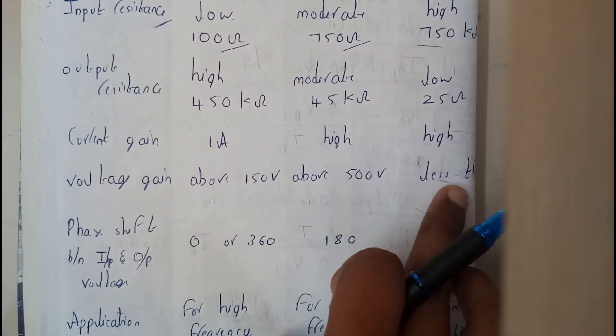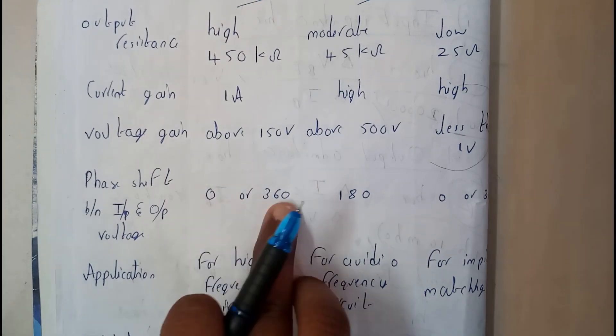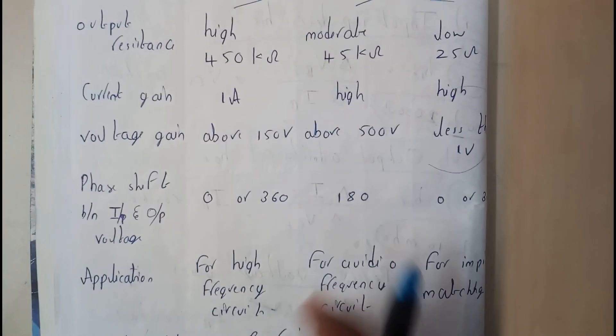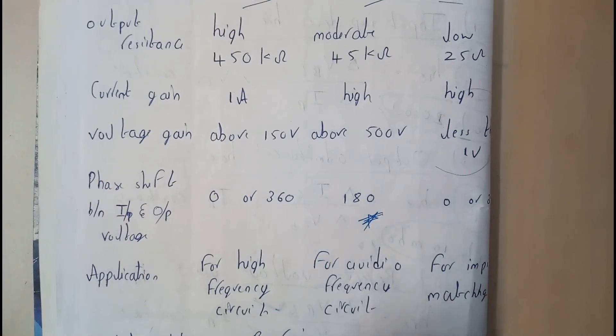In common collector the voltage gain is really low and the phase shift is 0 or 360, 180, and 0 or 360. This is the reason why we use common emitter in our oscillators guys, 180 degrees phase shift.